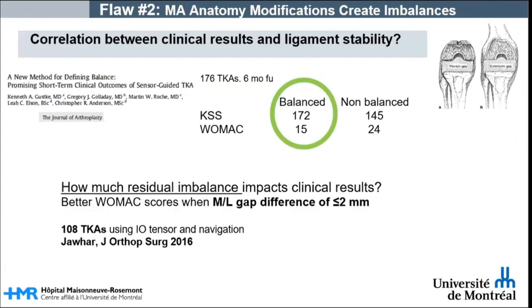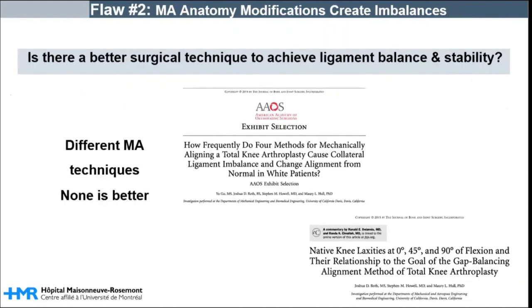There is wide variability in the literature regarding the effect of residual ligament imbalance on clinical outcomes after total knee arthroplasty. In one study, better clinical scores were achieved when the medial-lateral gap difference was 2 mm or less. Whatever technique you use performing mechanical alignment, the anatomical changes linked to the mechanical alignment goal of neutral femoral and tibial cuts are linked with instability.